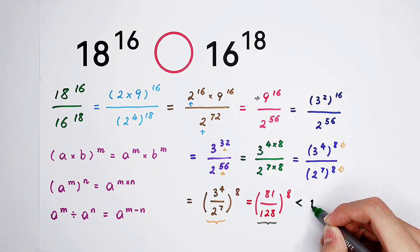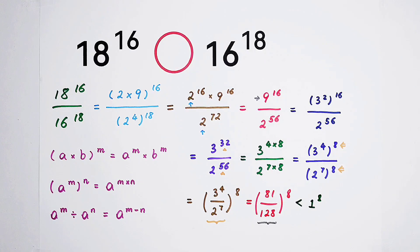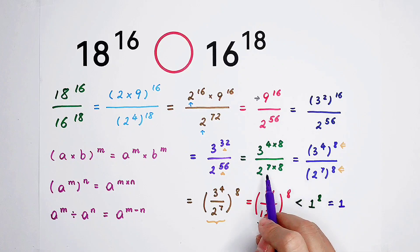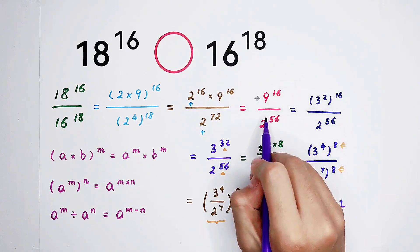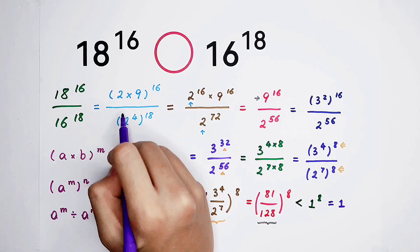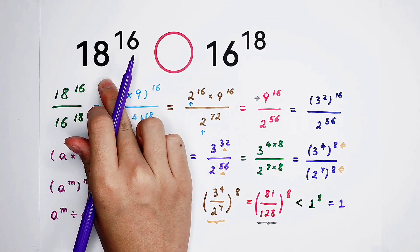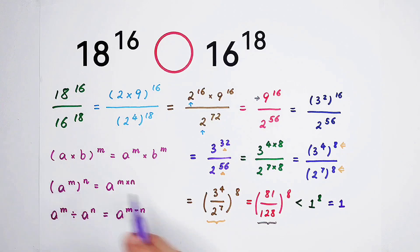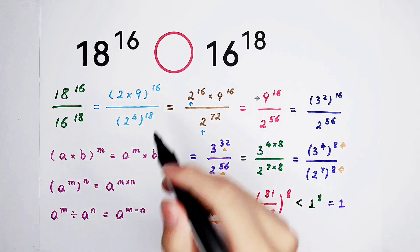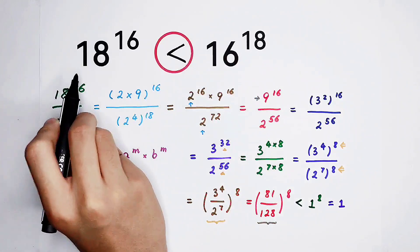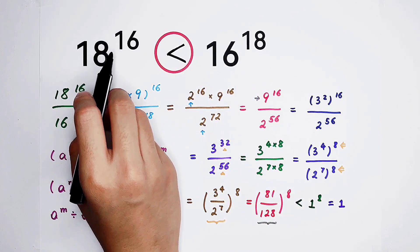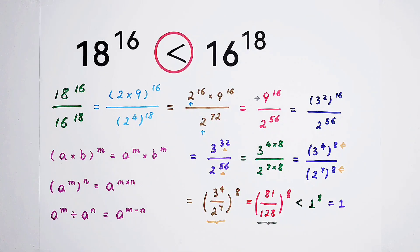Since the base 81/128 is smaller than 1, raising it to the power of 8 is still smaller than 1 to the power of 8, which is 1. This means the entire ratio is less than 1, so the right-hand side is much bigger. Therefore, 18 to the power of 16 is less than 16 to the power of 18 — by much!